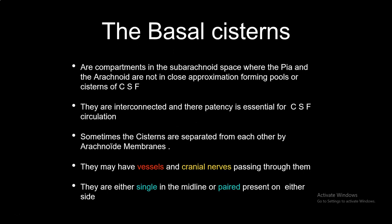The basal cisterns are subarachnoid spaces — wide subarachnoid spaces between the pia and the arachnoid, not in close proximity, forming pools filled with CSF. Cisterns means pools filled with fluid, which is the CSF, and they are interconnected to each other for the CSF to flow from the lateral ventricles to the third, to the fourth, to the subarachnoid space, reaching the arachnoid villi in the superior sagittal sinus. Sometimes the cisterns are separated from each other by arachnoid membranes, mostly incomplete. They contain vessels and cranial nerves passing in the subarachnoid space, and they are divided into single midline cisterns and paired lateral cisterns on either side.